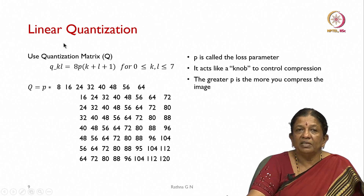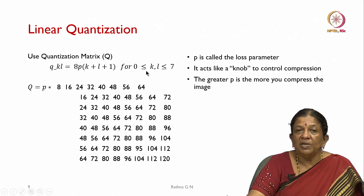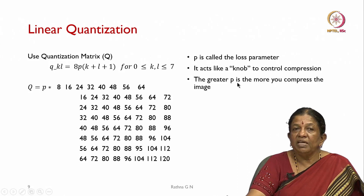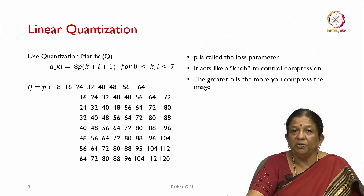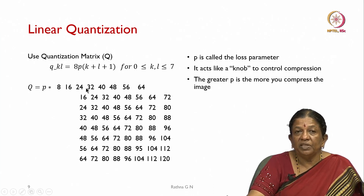We use a quantization matrix Q where q_kl is 8p(k+l+1) for 0 ≤ k,l ≤ 7. Here p is called the last parameter and acts like a knob to control compression — the greater p is, the more you compress the image. P can vary from 1 to any value. For p equal to 1, the quantization matrix entries are 8, 16, 24, 32, 40, 48, 56, 64.